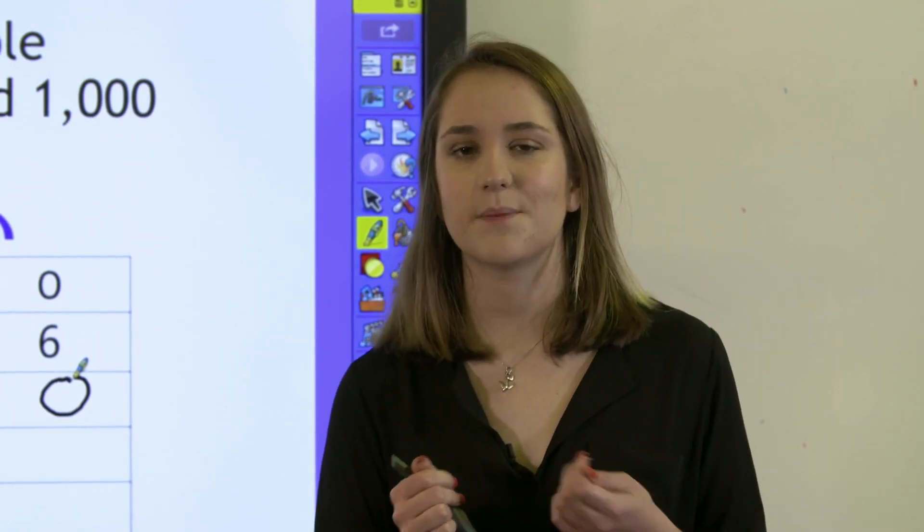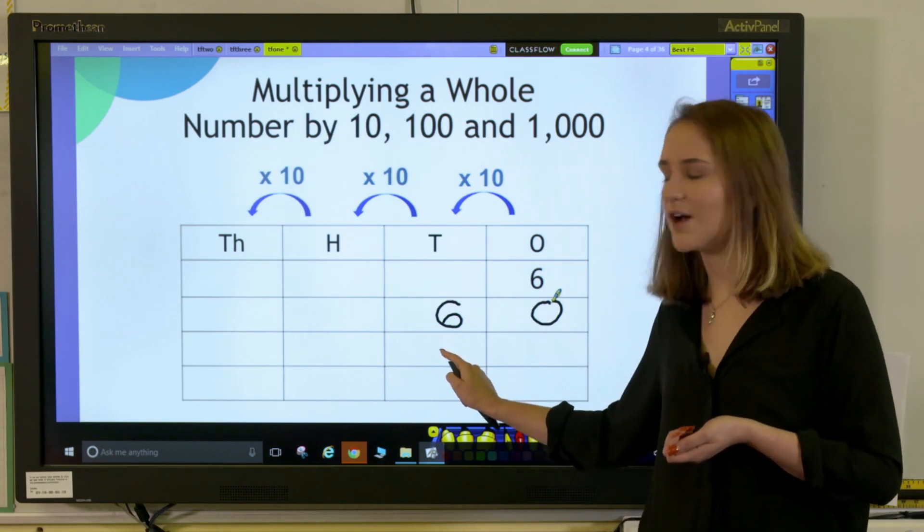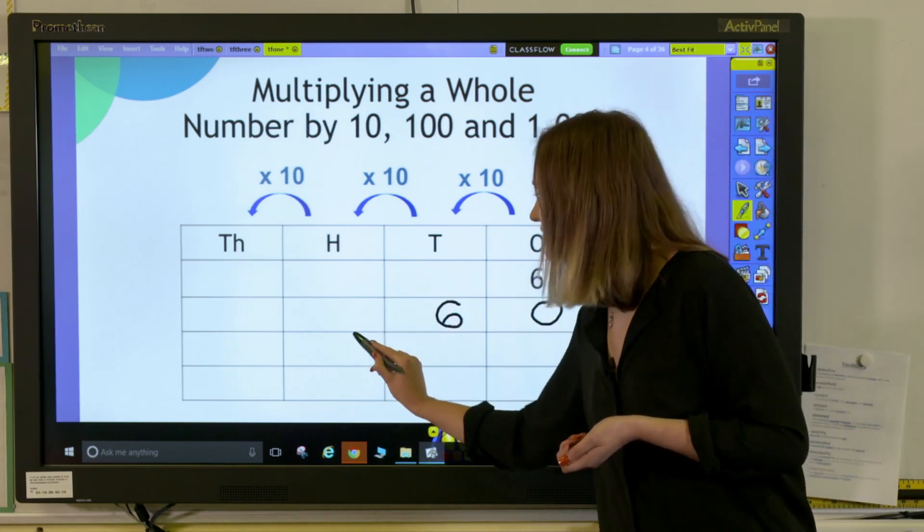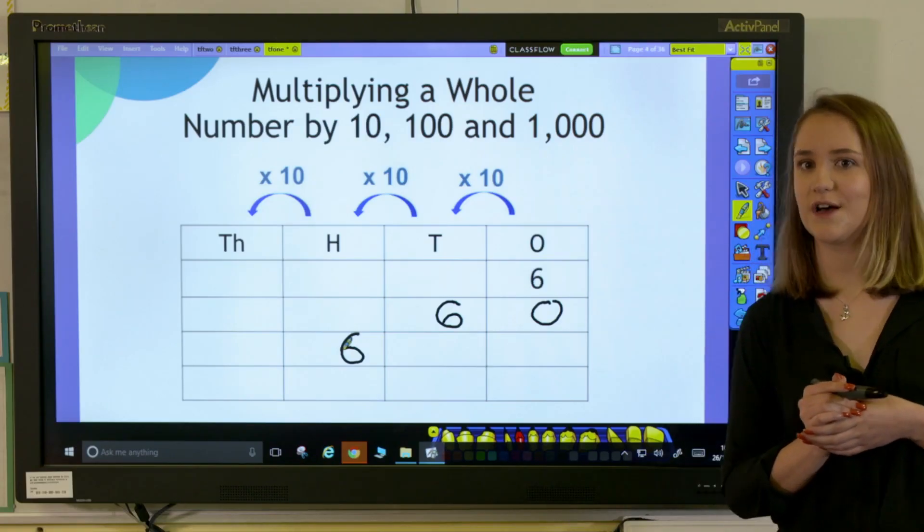How can we multiply 6 by 100? Well, we're going to move our 6 once into the 10s column and then again into the 100s column. This is because the 6 in the 100s column is 100 times larger than the 1s column.